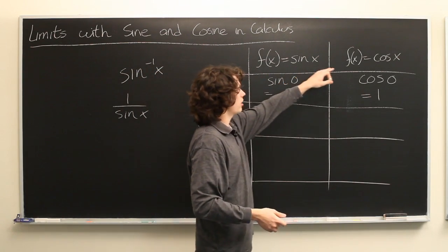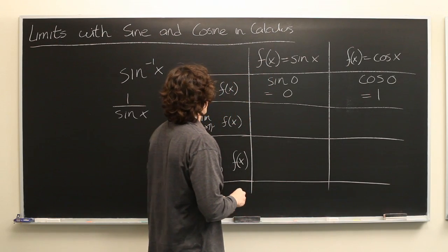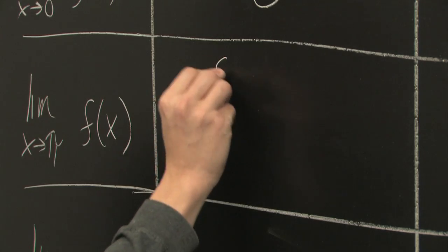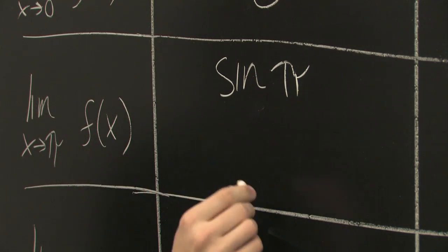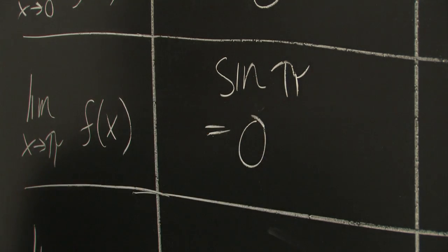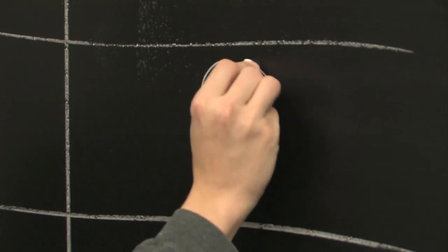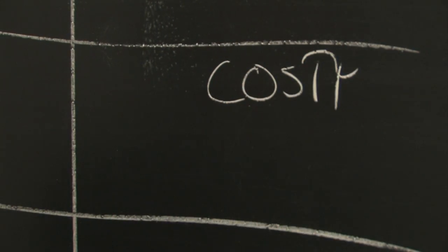But for now, we're just looking at sine and cosine, which are, as we said before, well-behaved. We can simply plug in the value here. Sine of pi, which is just 0. And here we have cosine of pi, which is equal to negative 1.